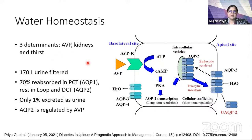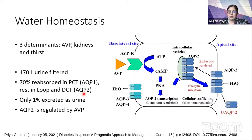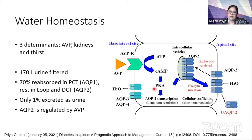Almost 170 liters of free water gets filtered at the glomerulus every day. About 70% is reabsorbed in the proximal tubule through constitutively expressed aquaporin-1 channels. The rest is absorbed in the distal tubule and the loop of Henle through aquaporin-2 channels. On the action of arginine vasopressin, there's increased adenylate cyclase activity and translocation of aquaporin-2 to the luminal surface, making the cell permeable to water.